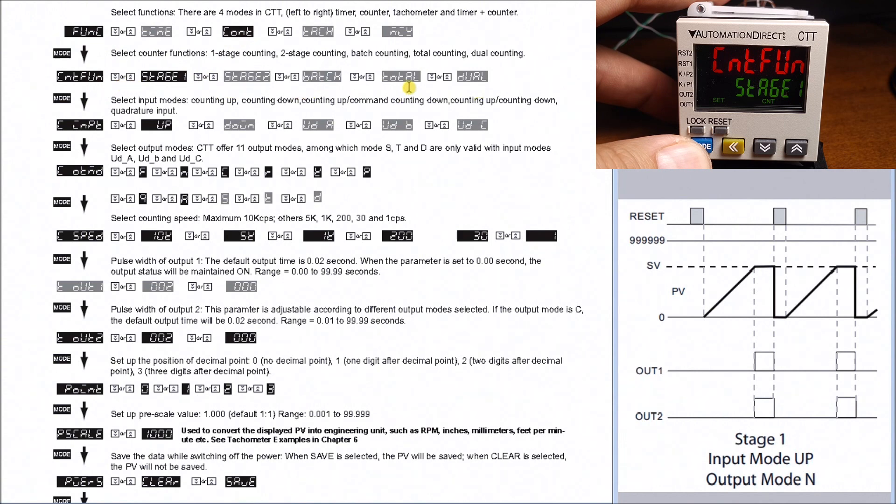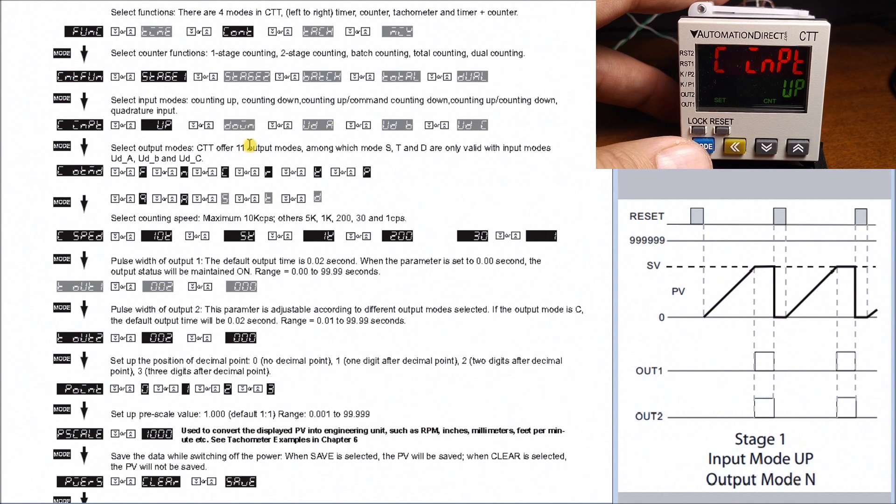Our next is up, so we have our up count, we have our down count, and we have A, B, and C for quadrature inputs if we want. Next we have our output mode - in our case here we are using N. Then we have our count speed.